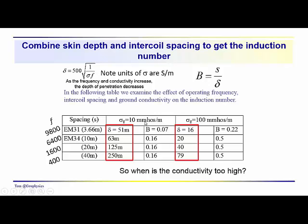So, for a ground conductivity of 10 millimhos per meter, relatively small, we have skin depths of 51 meters for the EM31 at the higher frequency, 63 meters, 125, and 250 meters as the frequency is decreased. So, we're getting greater depth of penetration here, with this decrease in frequency. The skin depth is greater, or increases with frequency. The induction number for the EM31 is 0.07, for this case, where we have a 10 millimhos per meter, or 10 millisiemens per meter ground conductivity. And, it's 0.16 for all three intercoil spacings on the EM34.